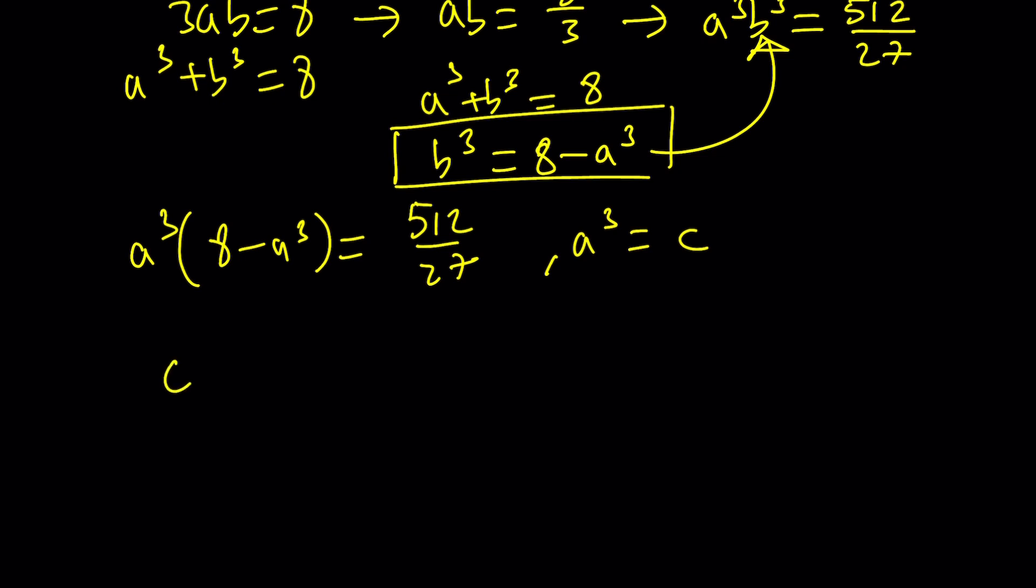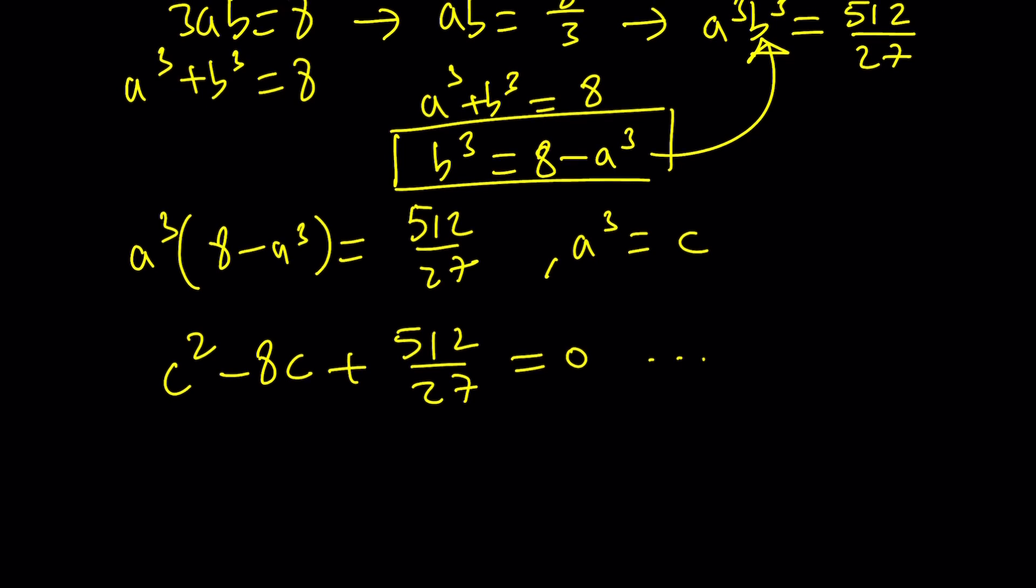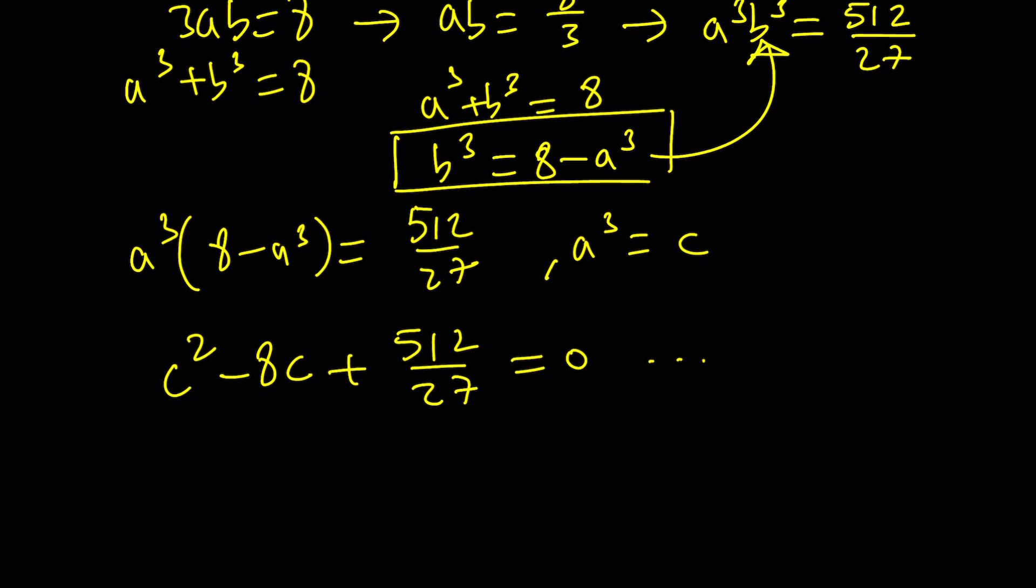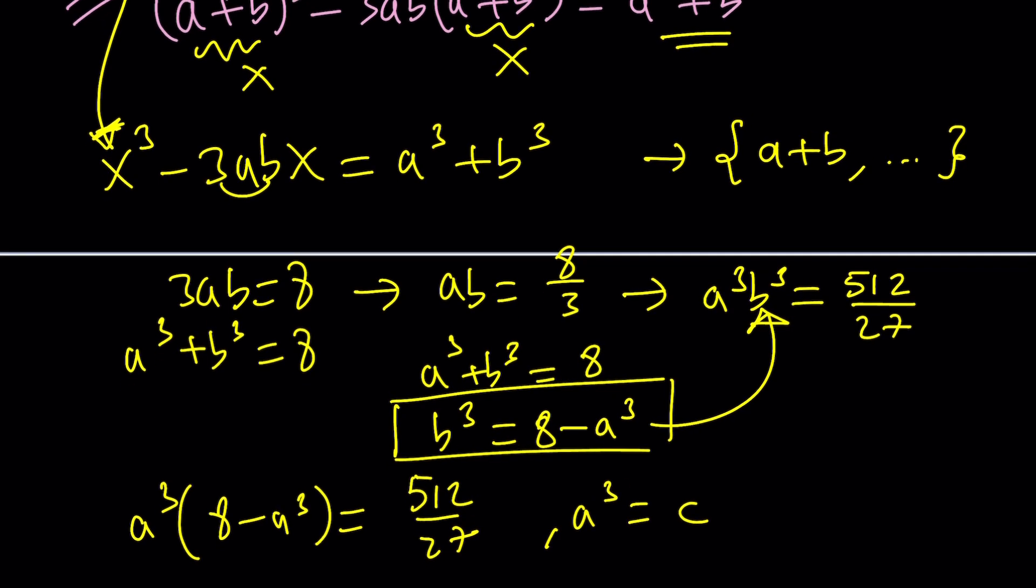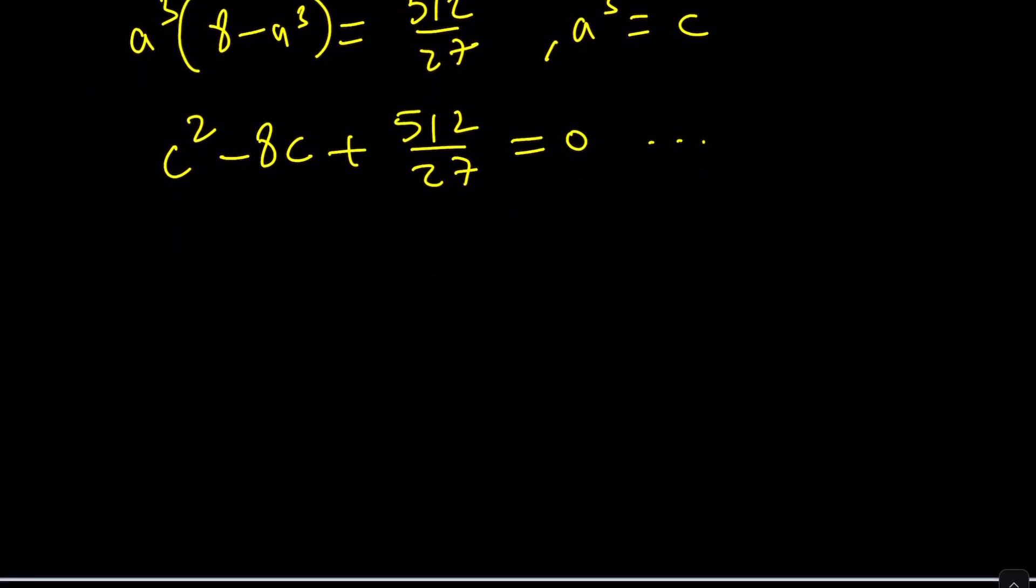With the quadratic formula this equation can be solved and then you'll find the c values and one of the c values is equal to a³ the other one is b³ because of symmetry. Then by cube rooting those values you can find the values of a and b and then by adding them you get the x values. That just gives you one solution. Very painful but if you think this is painful look at the quartic formula or even the quintic formula. Wait, is there a quintic formula? No it doesn't exist. So that's one way to do it. I'm going to leave it as an exercise for you.